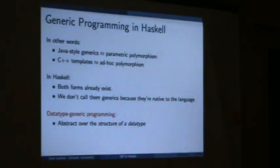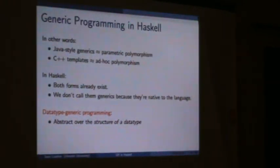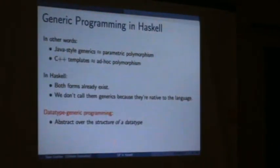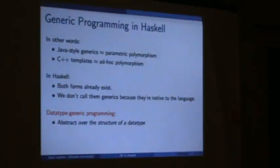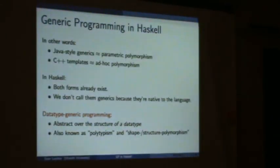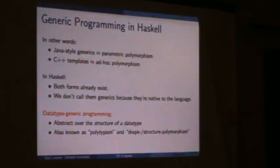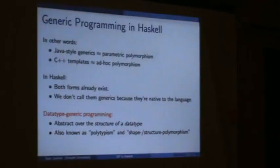What we call generics in the Haskell world — generally the Haskell community and researchers over the last 15 years or so — is called data type generic programming. The idea is that we abstract over the structure of a data type. Other names include polytypism and shape/structure polymorphism. To talk about data type generic programming, we have to start with data types.